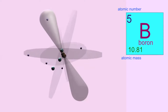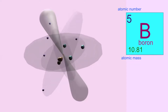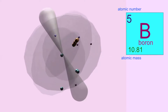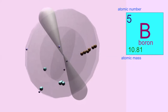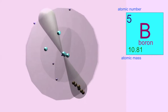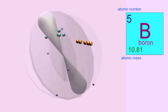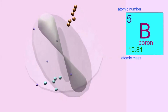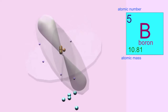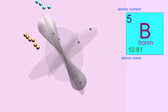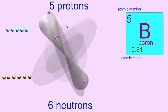The element boron has the atomic symbol B and the atomic number 5, which indicates there are five protons in the nucleus and five electrons in a neutral atom. The atomic mass number is 10.8. Now, there can only be single particles in the nucleus — a nucleus does not have 0.8 of a neutron — and so this indicates that there are different forms of boron: some have 11 heavy particles in the nucleus (five protons and six neutrons), while others have 10 heavy particles in the nucleus (five protons and five neutrons).